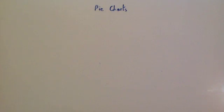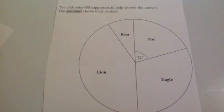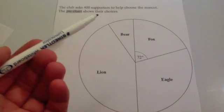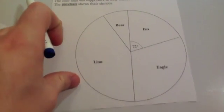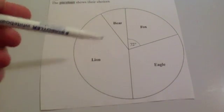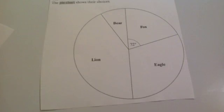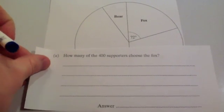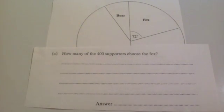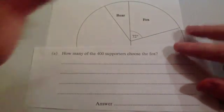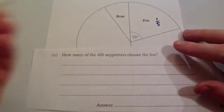Let's have a look at a typical question then. Here we've got a pie chart. The club asks 400 supporters to choose their favourite mascot. The pie chart shows their choices. We've got four sectors representing fox, eagle, lion, and bear. As you can see, lion is the most popular one. The question says, how many of the 400 supporters choose fox? Now, as we've seen earlier, 72 degrees is a fifth. So that means that a fifth of the supporters choose fox.